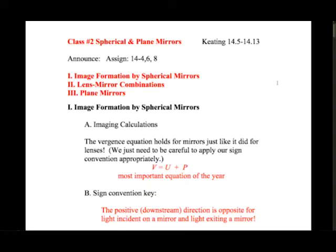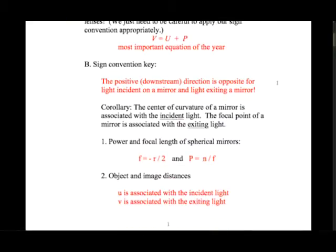The sign convention we introduced last class is that the positive downstream direction is opposite for the incident light and the light exiting the mirror. The light reflects off a mirror, so the downstream direction changes when that reflection happens. Upstream and downstream have a certain direction for the incoming light, and they're reversed for the exiting light. Downstream always means the way the light is flowing, and upstream means against the way the light is flowing.